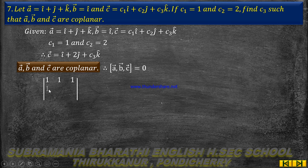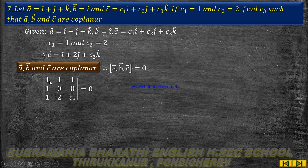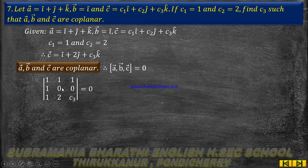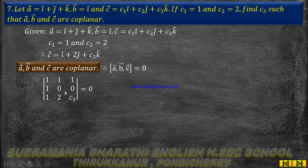So, the box product of A, B, C equals zero. Find the determinant using the coefficients of A, B, and C vectors. A vector coefficients: 1, 1, 1. B vector: 1, 0, 0. C vector: 1, 2, C3. Set the determinant equal to 0.